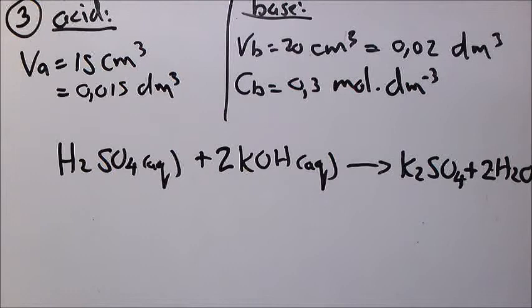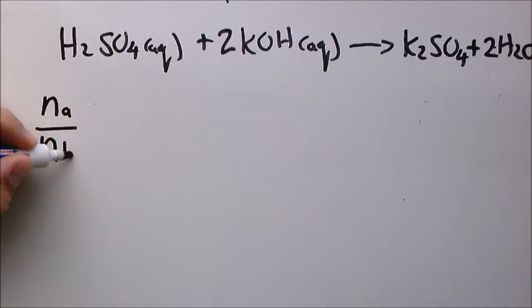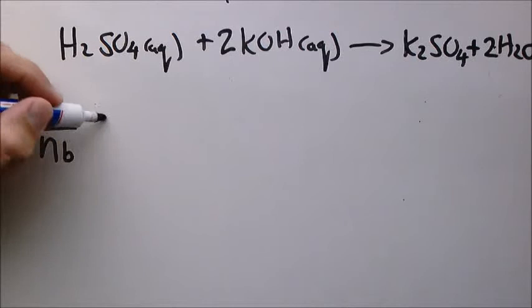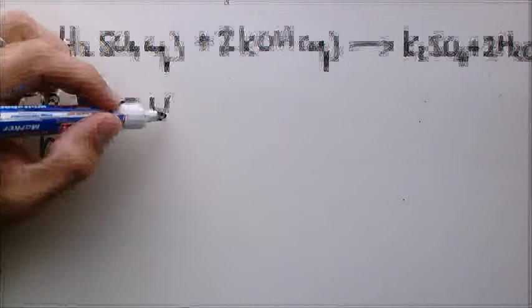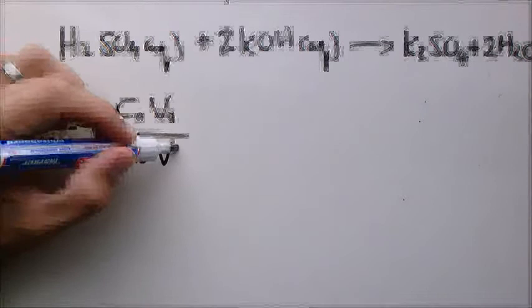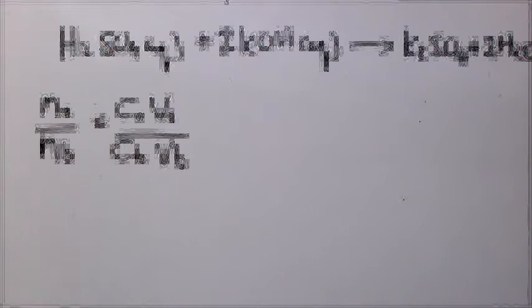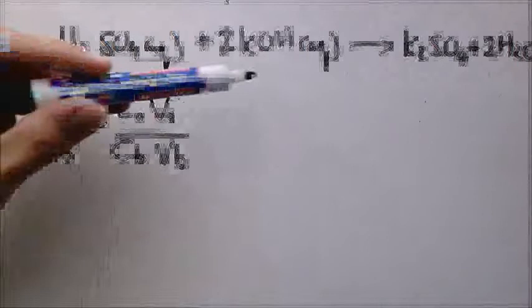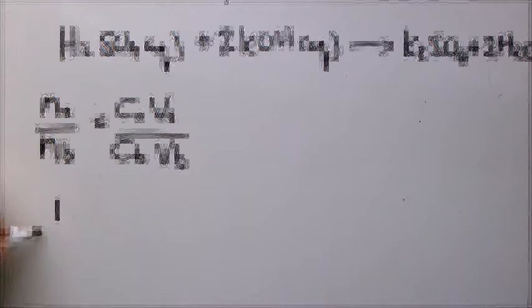For titration, we write the moles of acid divided by moles of base and use the concentration equation. Since moles equals concentration times volume, we get: (C_acid × V_acid) / (C_base × V_base) equals the mole ratio of acid to base. This doesn't have to be exact numbers because it follows the ratio. From the balanced equation the mole ratio of acid to base is 1 to 2, so we substitute 1 divided by 2.